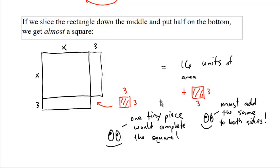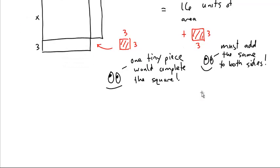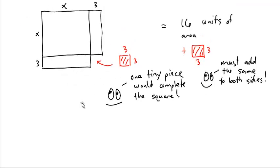You have to add the same thing to both sides. If you're going to add nine units of area to the left, you have to add nine units of area to the right. But you end up with a perfect square.